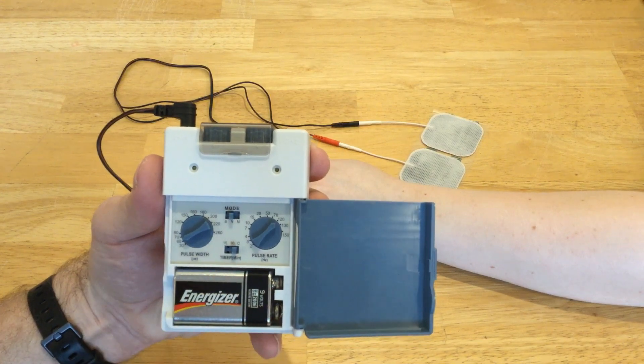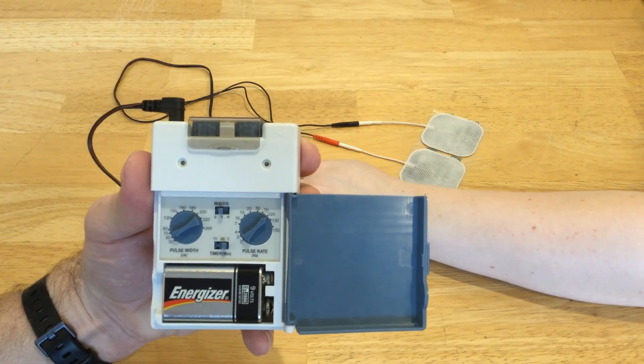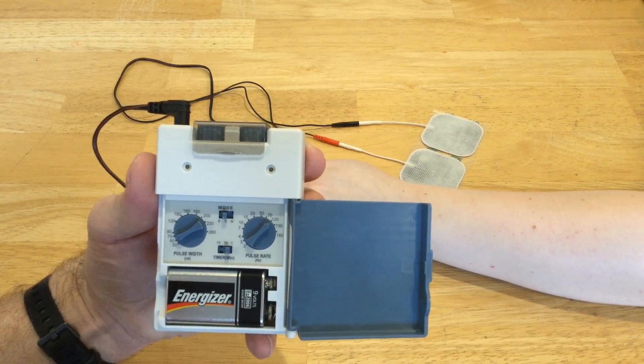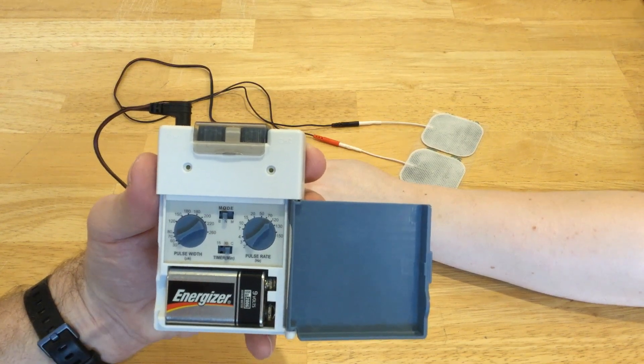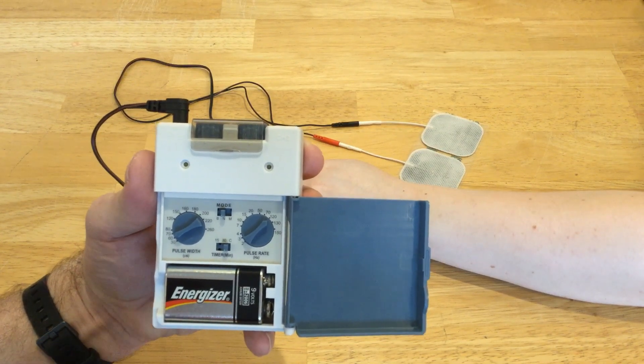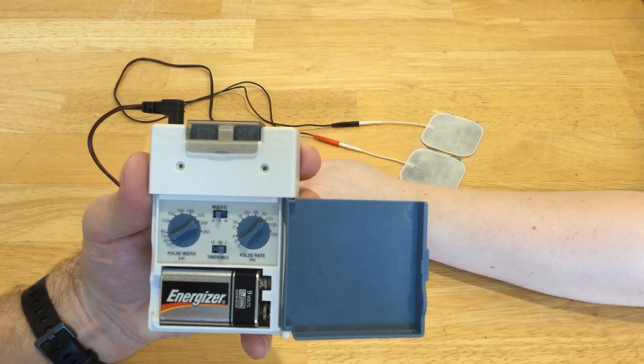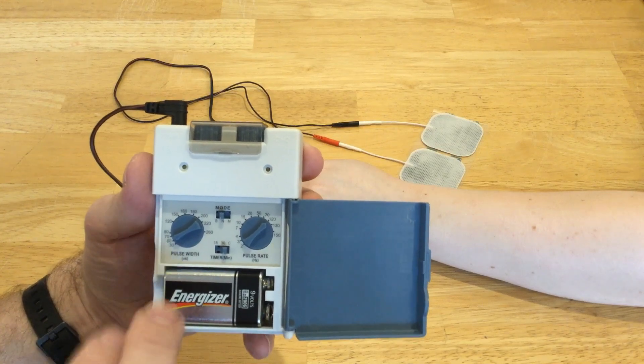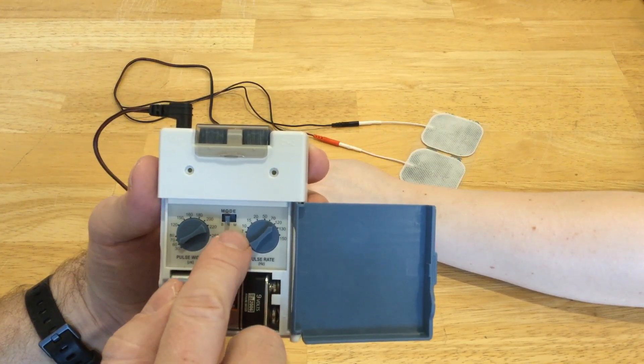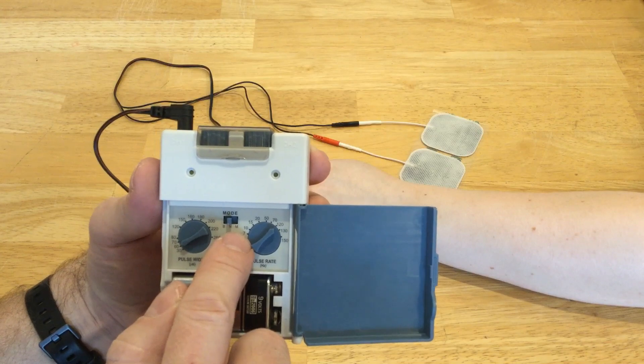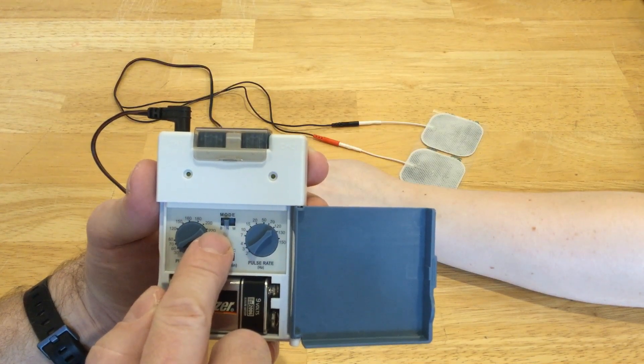For mode, I just have it set on N, which means not modulated. That's the most straightforward waveform and easiest one for clients to get used to and be able to report what they're feeling. You can also put it on M for modulated or B for burst.